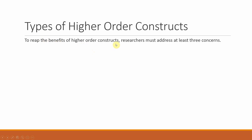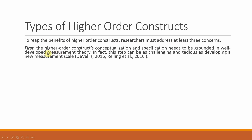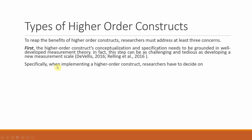There are different types of higher order constructs. To reap their benefits, researchers must address at least three concerns. First, the higher order construct's conceptualization and specification needs to be grounded in well-developed measurement theory. This step can be as challenging and tedious as developing a new measurement scale. Researchers need to decide whether a specific literature exists for their construct and whether their model will be reflective or formative. This depends on the conceptualization, and researchers must decide on the measurement model specification of the lower order components.